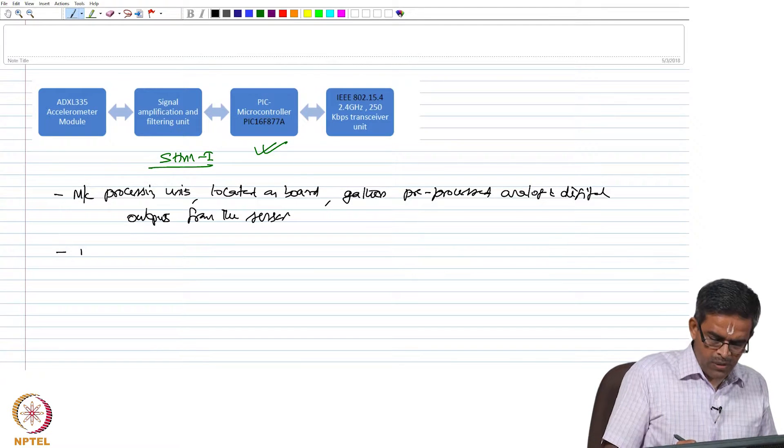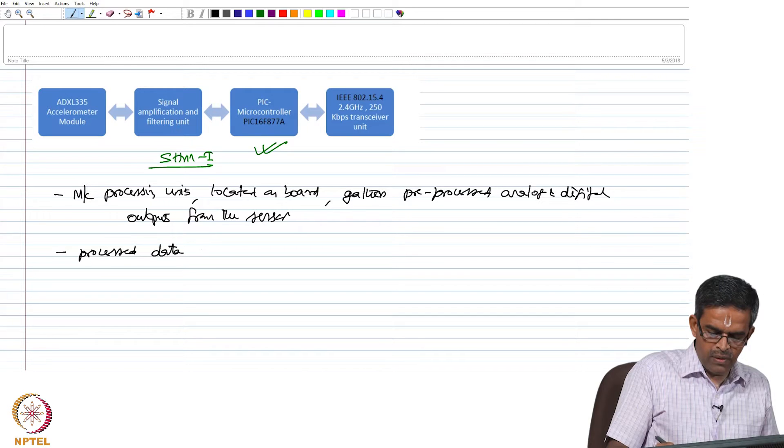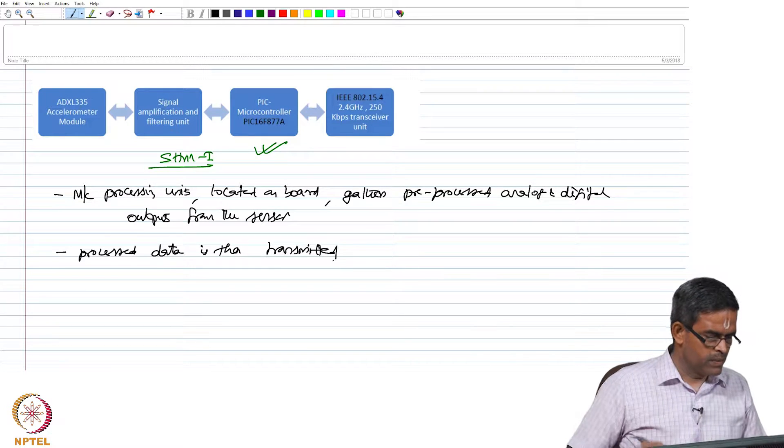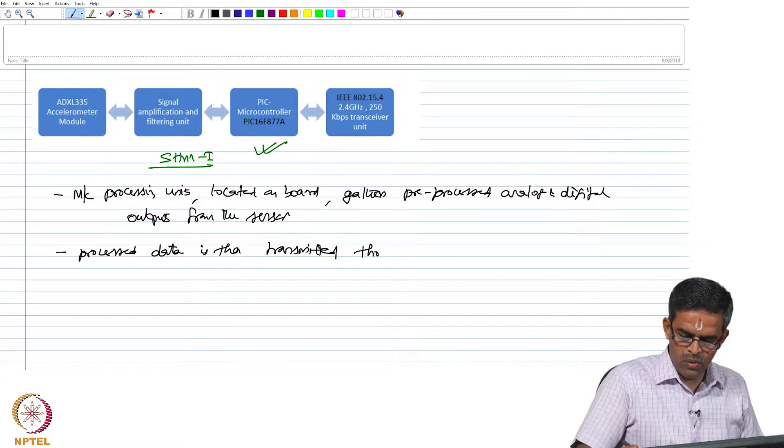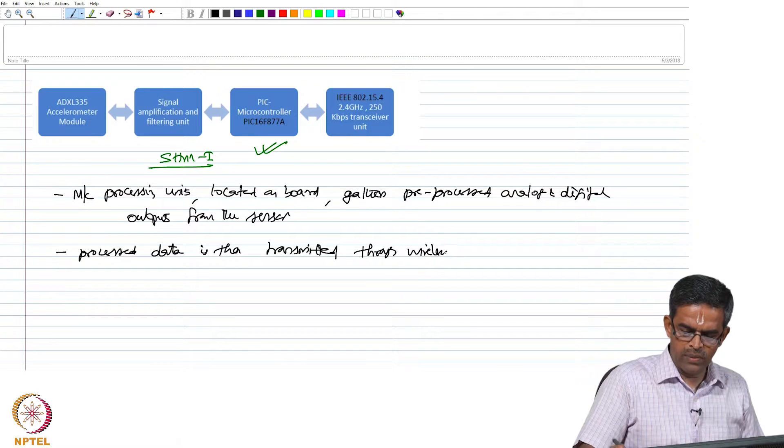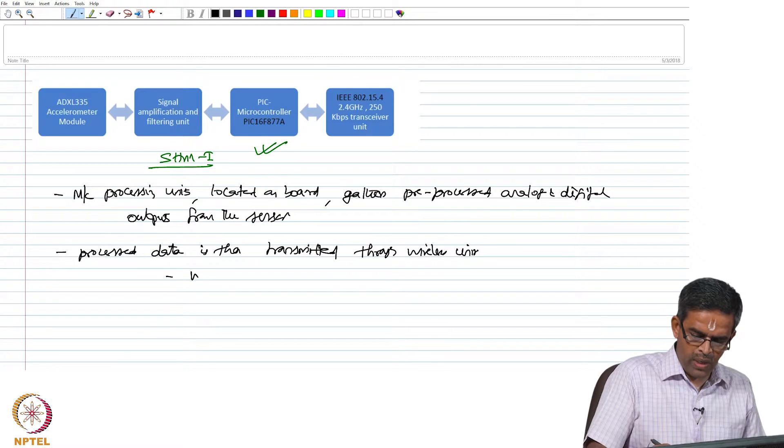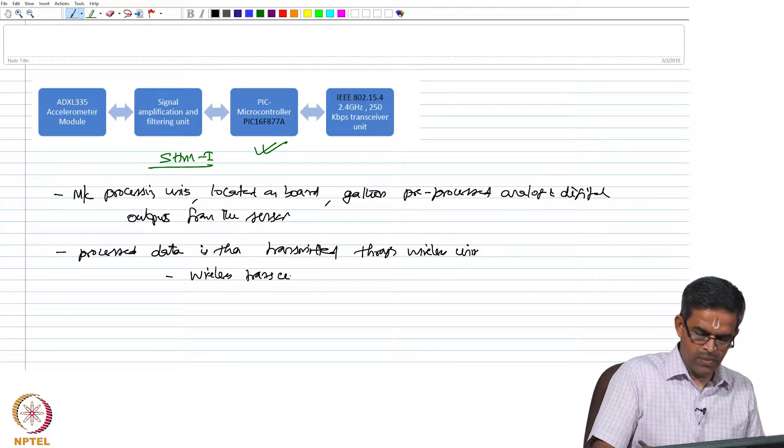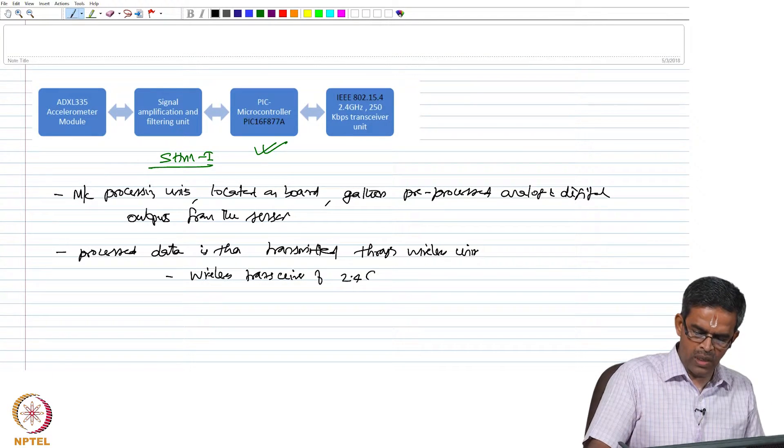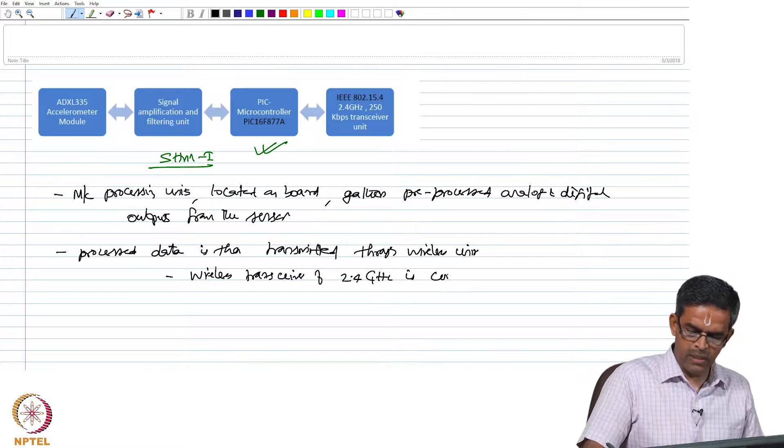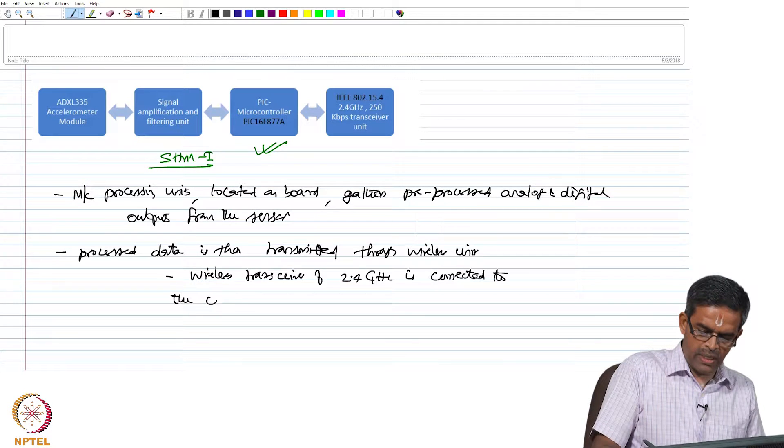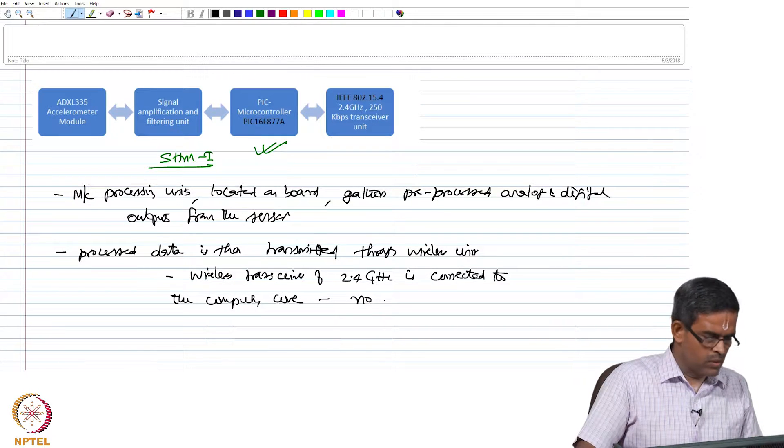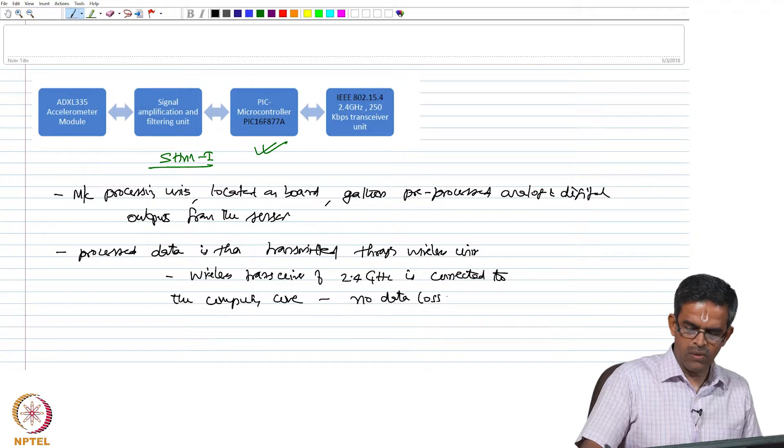The processed data is then transmitted through wireless unit. The wireless transceiver of 2.4 gigahertz is connected to the computing core directly, so that no data loss is seen.